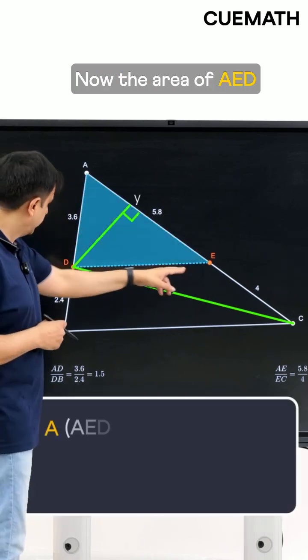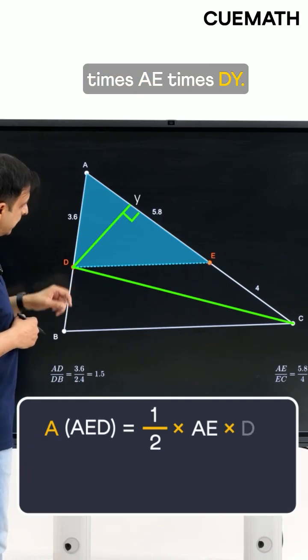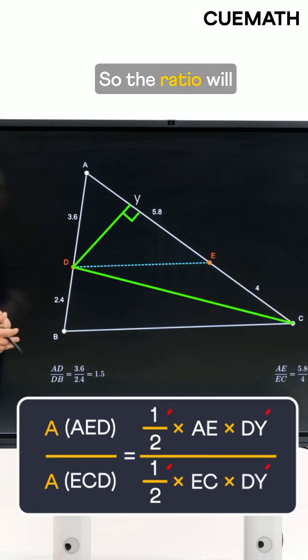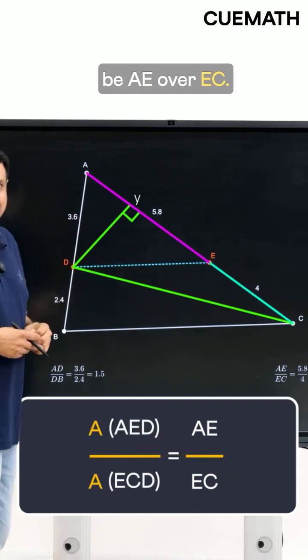Now the area of AED will be half times AE times DY. The area of ECD will be half times EC times DY. So the ratio will be AE over EC.